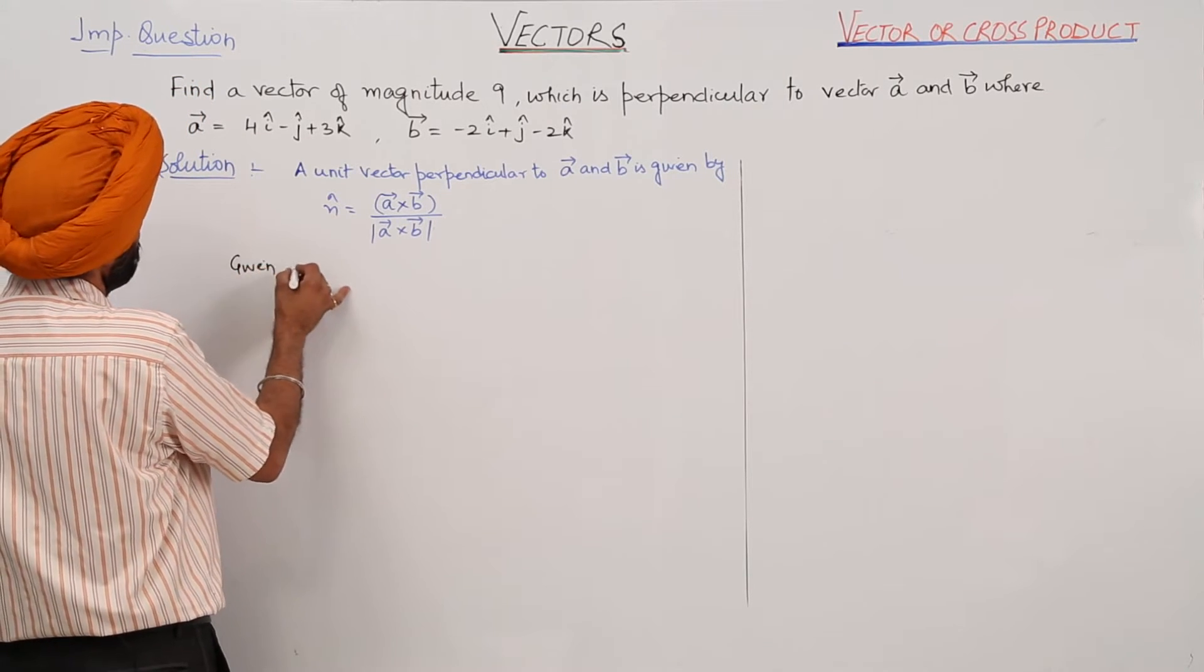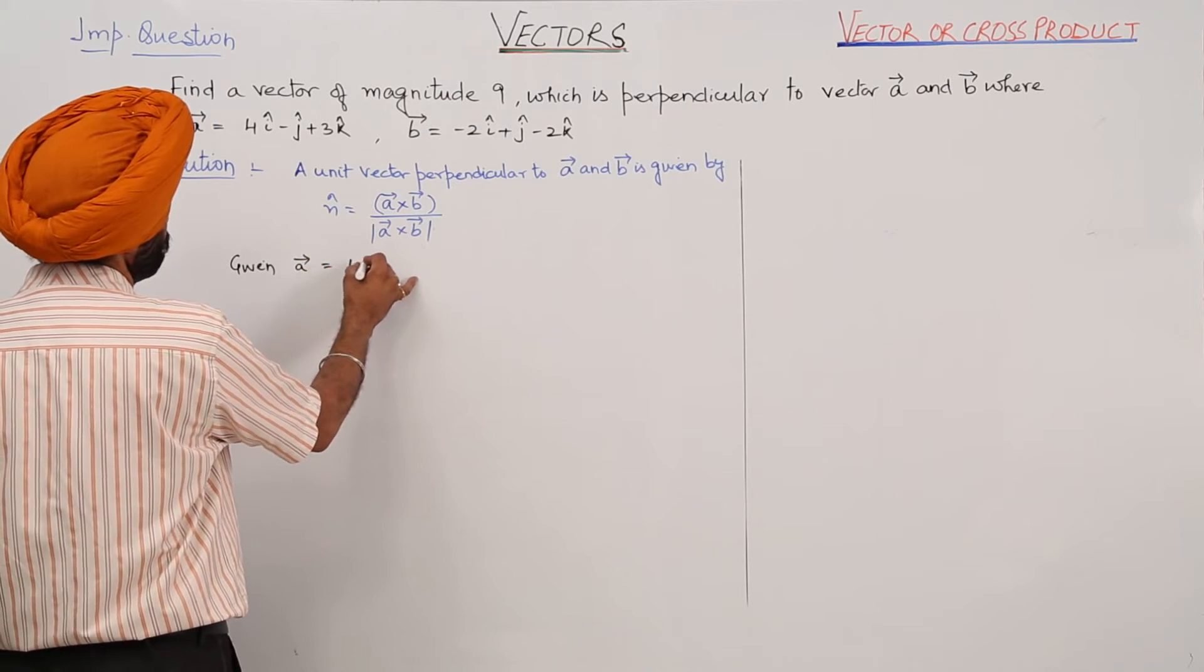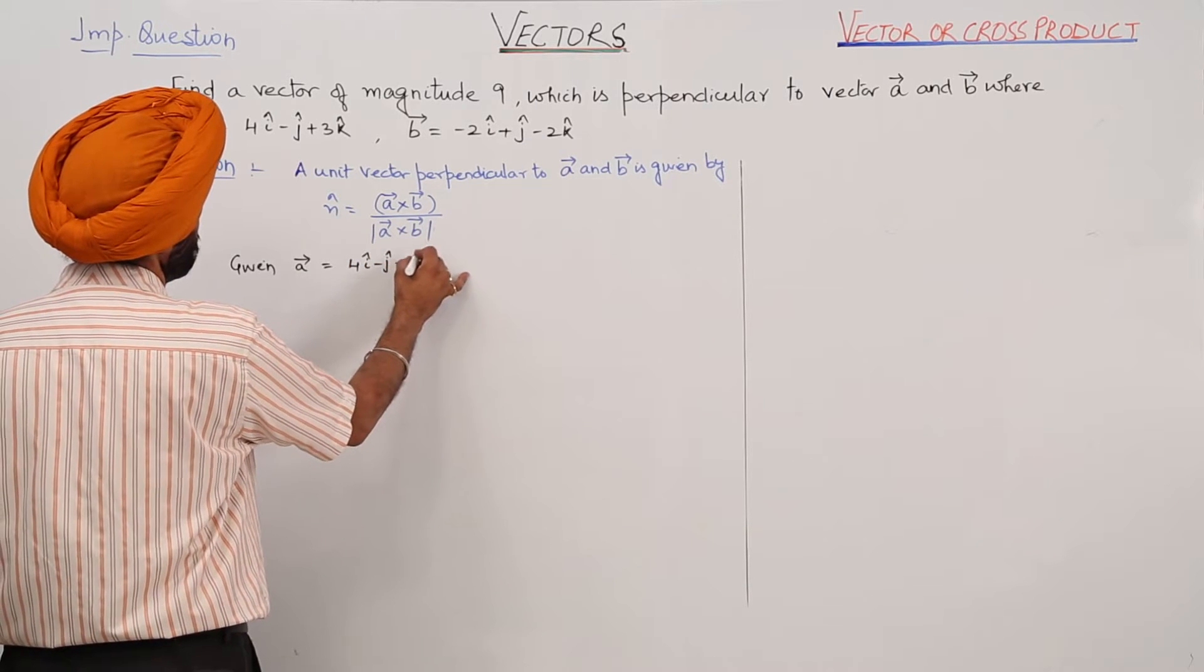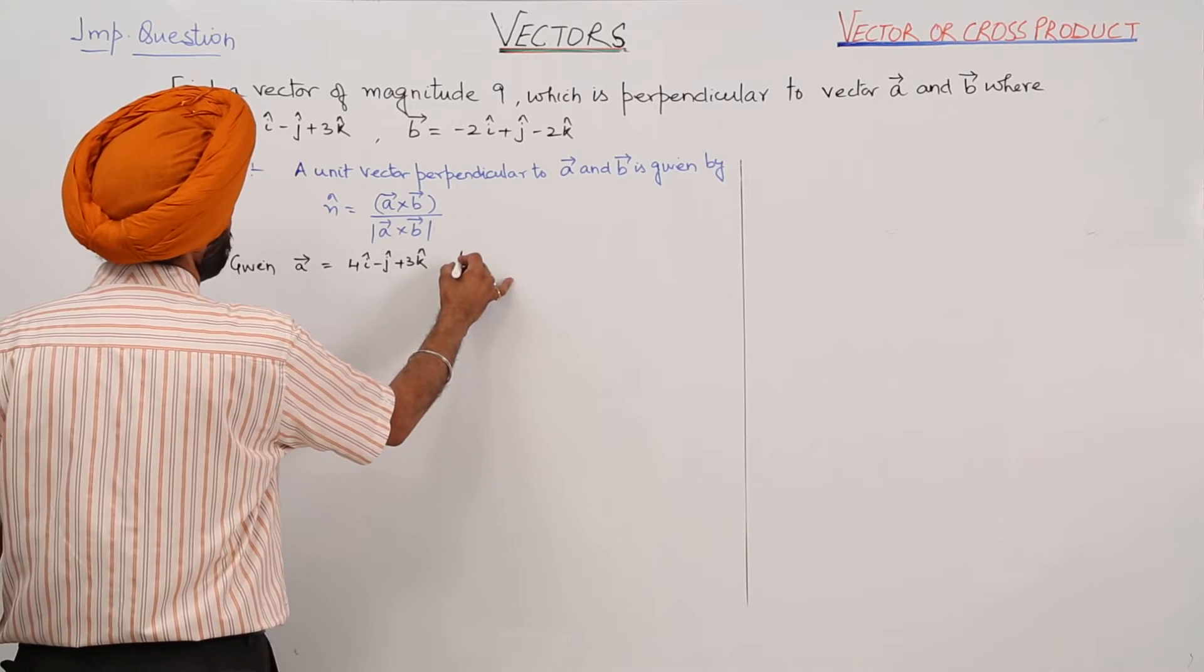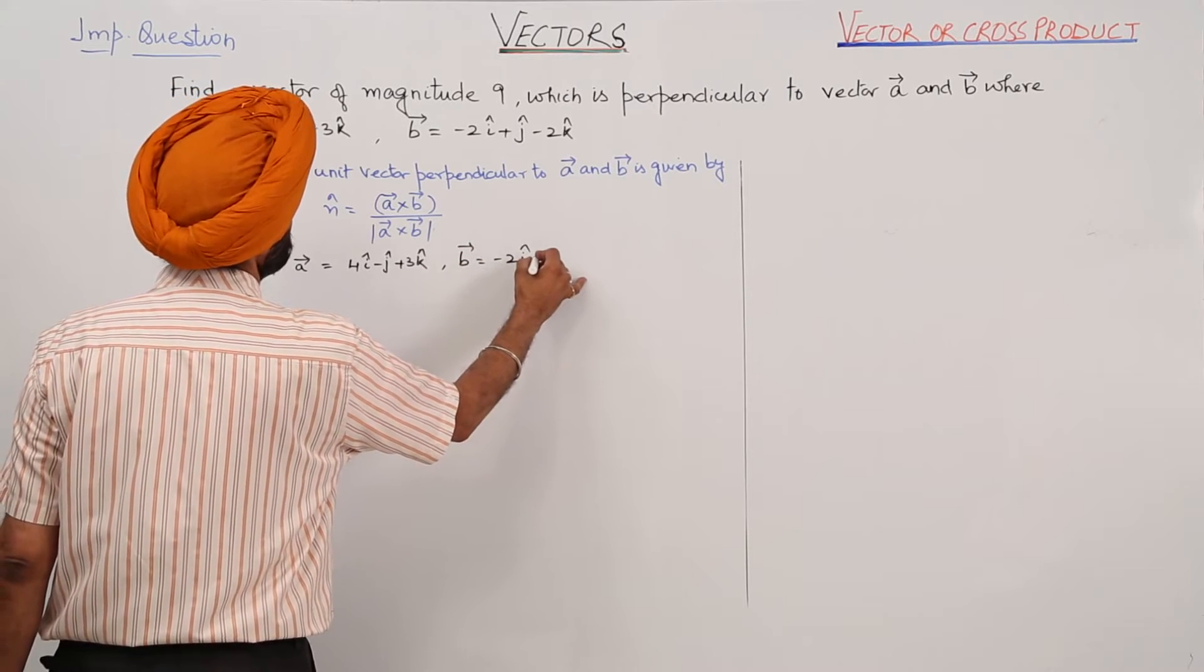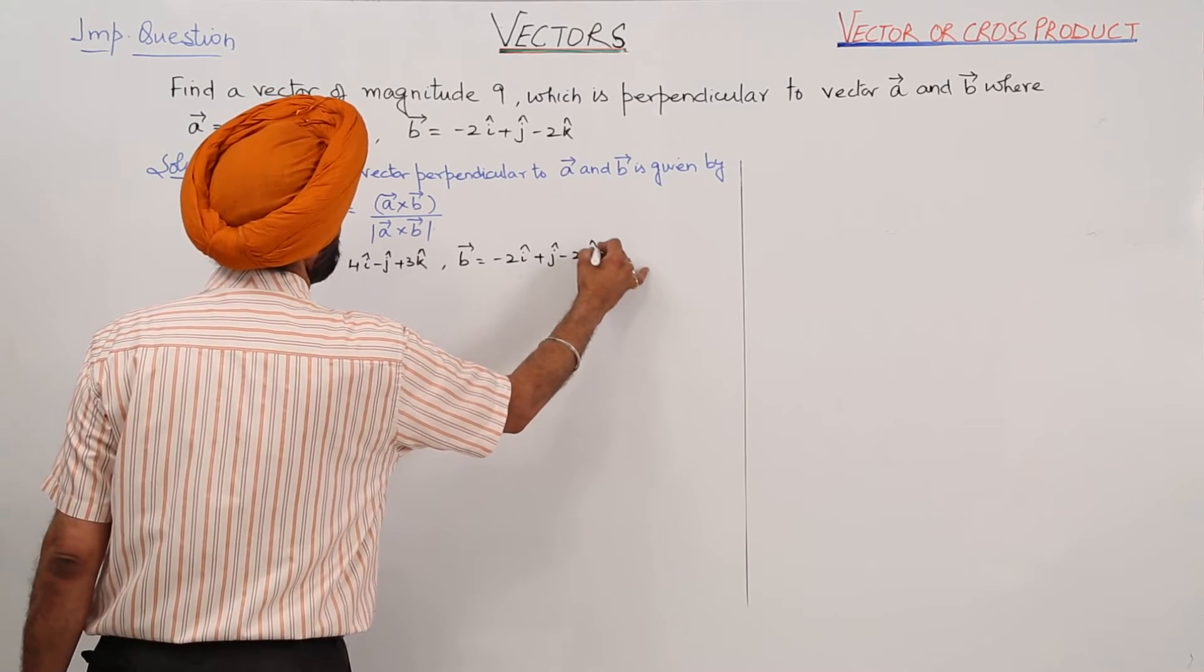Given vector A equals 4i cap minus j cap plus 3k cap, and vector B equals negative 2i cap plus j cap minus 2k cap.